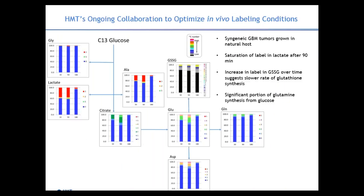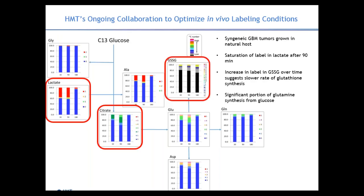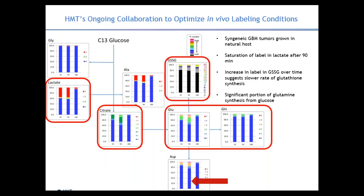HMT has been working with our collaborator at Boston College to optimize in vivo labeling using a glioma-based model. Tumors were grown subcutaneously in the flank and a single bolus of C-13 glucose was injected. Tumors were collected 30, 90, and 180 minutes after C-13 injection. We see early labeling of lactate that quickly clears after 90 minutes, a time-course increase in citrate labeling clearing again by 180 minutes, and glutathione showing a much slower rate of synthesis with continued increase in label over the full 180 minutes. Interestingly, although grown in the flank, we also see glutamate and glutamine synthesis using glucose carbons, though the large portion of unlabeled aspartate suggests glutamine is still a major requirement for these cells.